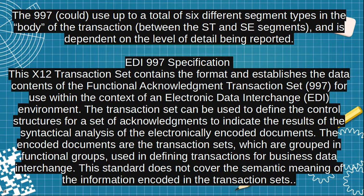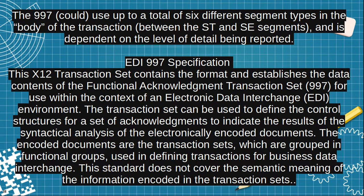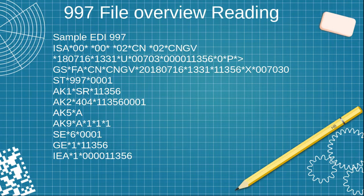Regarding the EDI 997 specification: the X12 transaction set contains the format and establishes the data content of the functional acknowledgement transaction set 997 for use within the context of an electronic data interchange environment. The transaction set can be used to define the control structure for a set of acknowledgements to indicate the result of the syntactical analysis of electronically encoded documents. The encoded documents are the transaction sets grouped in functional groups used in defining transactions for business data interchange.